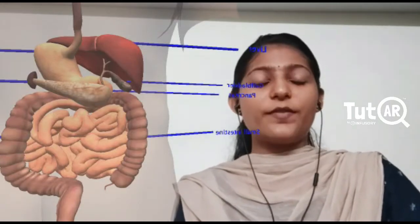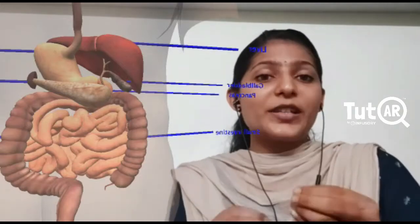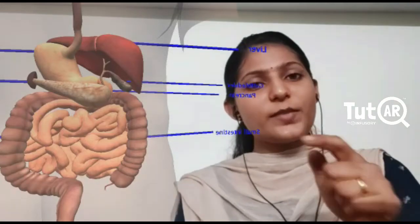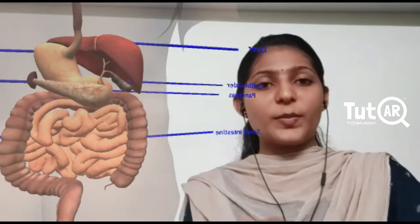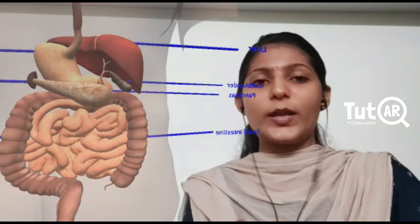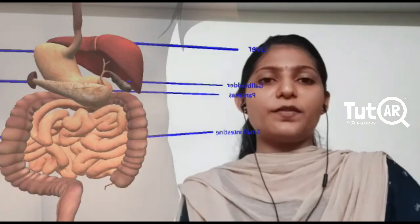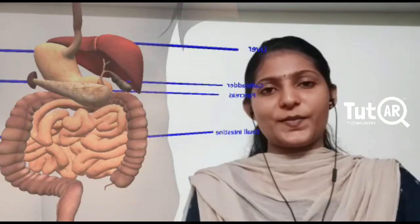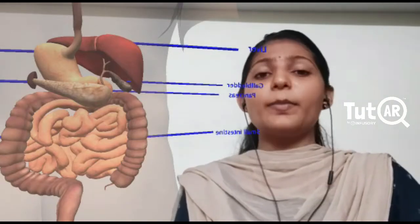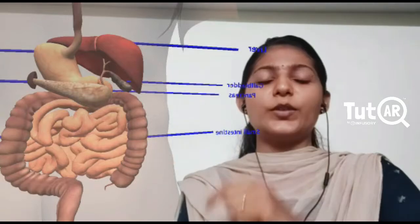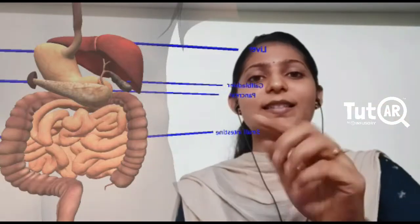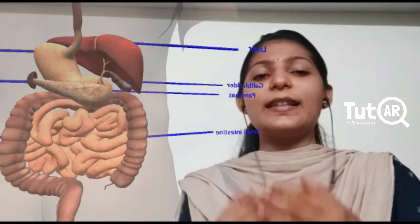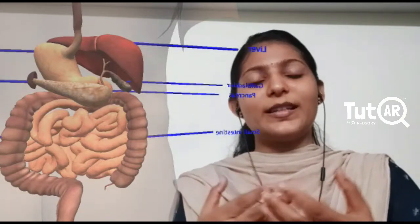So again here you could see from the pancreas, the pancreatic juice is being discharged into the small intestine. Now this pancreatic juice contains trypsin and lipase, two enzymes. Trypsin is meant for the complete protein digestion. And lipase is meant for the fat digestion. From the liver, the bile juice is secreted into the small intestine. And this bile juice creates the alkaline medium for these trypsin and the other enzymes to work out in the small intestine.